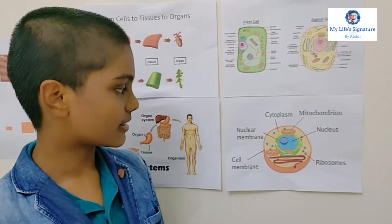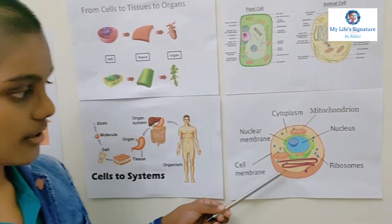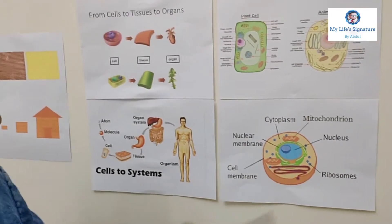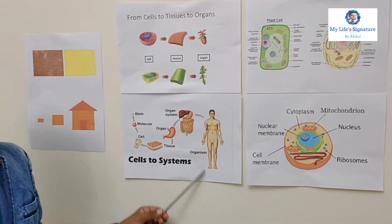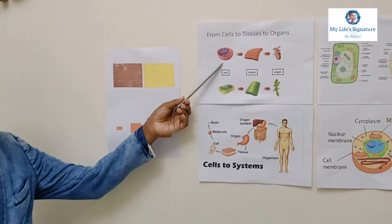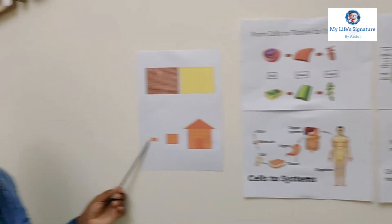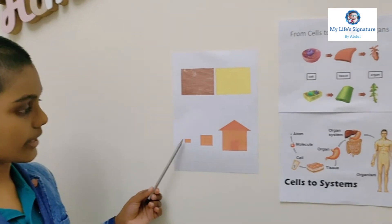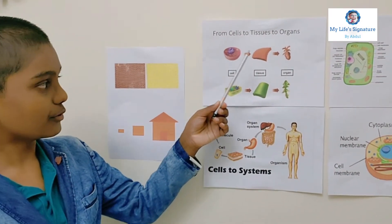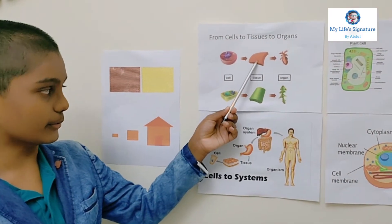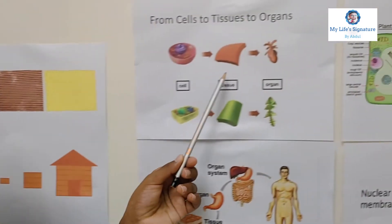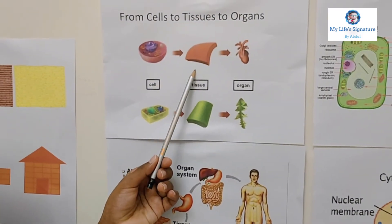This is what our cell looks like, and I'm going to show you how this tiny cell becomes an organism. So let's consider this cell as a brick — many bricks together form a wall, just like many cells together form a tissue. Many walls form a room, just like many tissues form an organ.